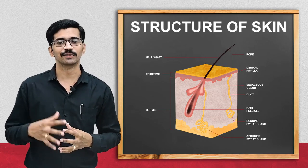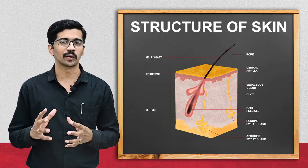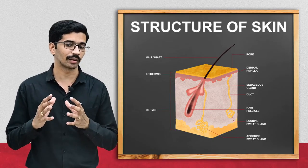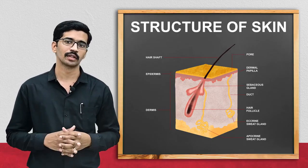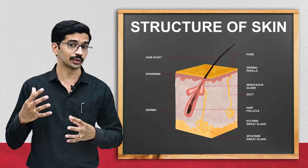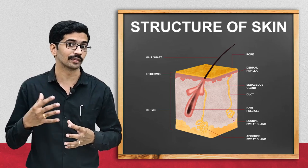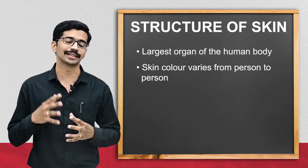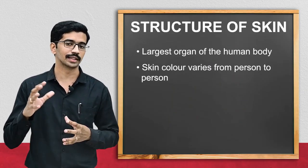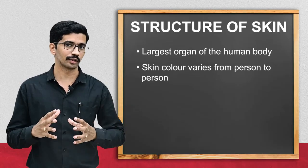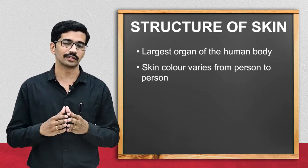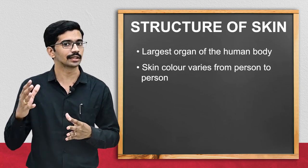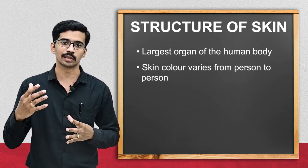Hello everyone. In this video we are going to see the anatomy, that is the structure of the largest organ of the human body. The question in everyone's mind will be: what is the largest organ of the human body? So it is nothing but the skin. The skin is the largest organ of the human body, which covers the entire human body, and in the orifices it continues as a mucous membrane.